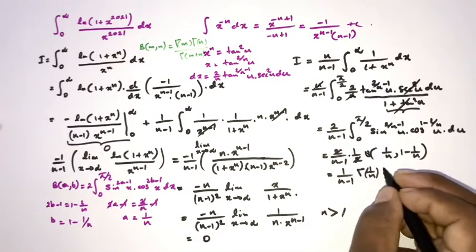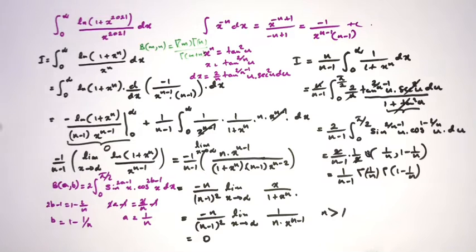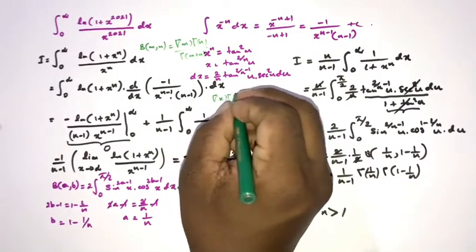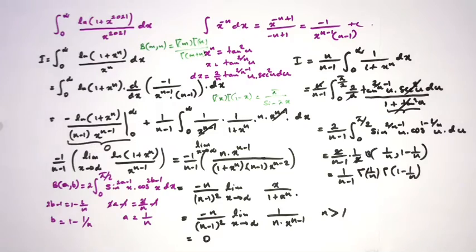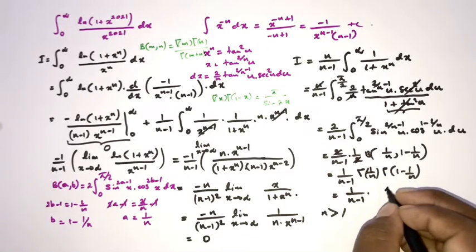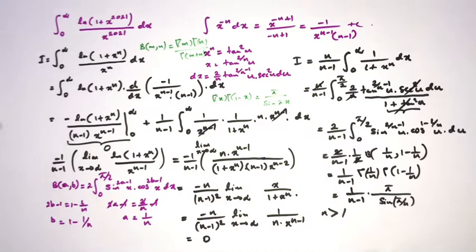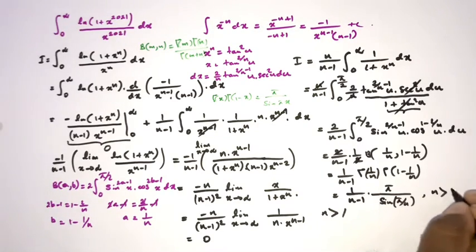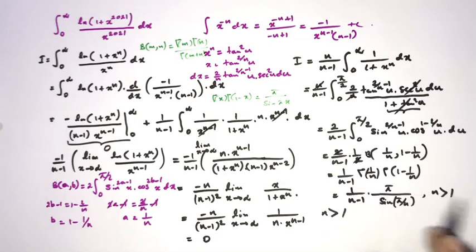Applying Euler's reflection formula — Γ(x)·Γ(1 - x) = π/sin(πx) — the result becomes (1/(n-1)) · π/sin(π/n). So the final answer is π / [(n-1)·sin(π/n)], valid for any integer n greater than 1. Thank you for watching.